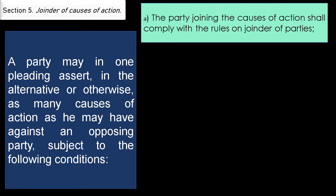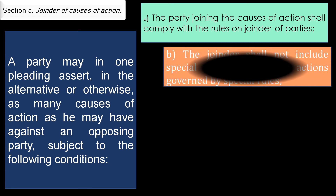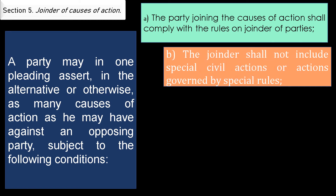What are those conditions? Letter A: the party joining the causes of action shall comply with the rules on joinder of parties. The rules on joinder of parties can be found in Rule 6. Letter B: the joinder shall not include special civil actions or actions governed by special rules. So you have to know what those special civil actions are.